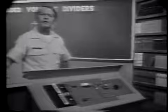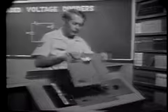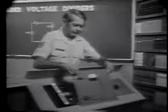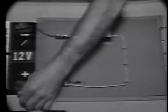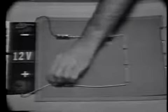Let's use a different circuit and start by reviewing what we already know about voltage dividers. I'll remove the first trainer and put this one in its place, making the connections to the power source, and of course applying power.